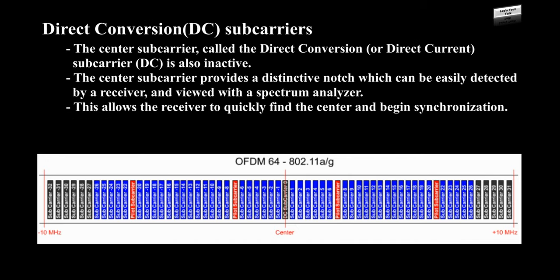DC subcarriers: The center subcarrier, called the direct conversion or direct current, DC, subcarrier, is also inactive. The center subcarrier provides a distinctive notch which can be easily detected by a receiver and viewed with a spectrum analyzer. This allows the receiver to quickly find the center and begin synchronization.